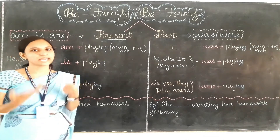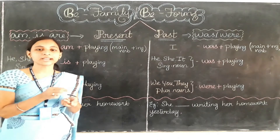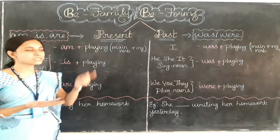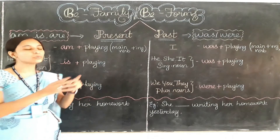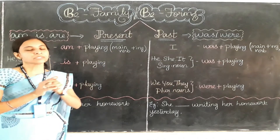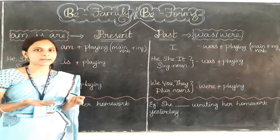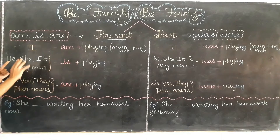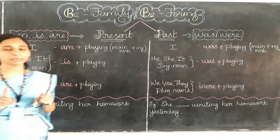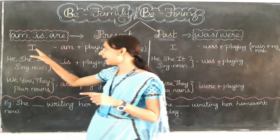Main verbs are action verbs like play, eat, drink, sleep, read, write. So when we use B form verbs in a sentence, we need to add -ing after the main verb. So let's learn about the first verb, that is am. Am is the present time verb. It can be used only with the subject I. Remember that the verb am can be used only with the subject I.